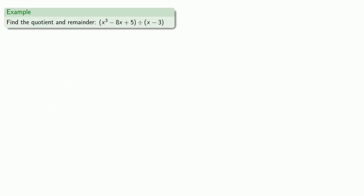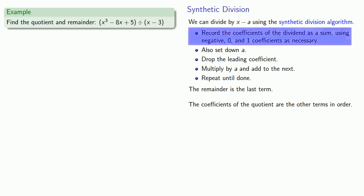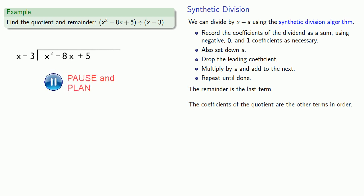One of the important things to keep in mind about synthetic division is we need to record all coefficients using negative, 0, and 1 coefficients as necessary. So here our dividend has an X to the third and an X term, but no X squared term. We say that it's a depressed polynomial. Possibly it's depressed because it's missing something. So again, synthetic division is essentially long division written short. So we can set up our long division. And we'll rewrite our dividend using negative, 0, and 1 coefficients as necessary. Now we only need the coefficients of the subtrahend of the divisor, so we'll get rid of everything else.